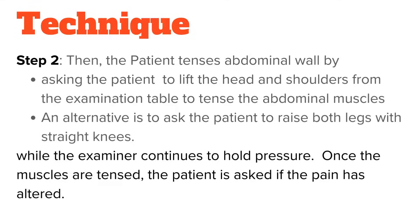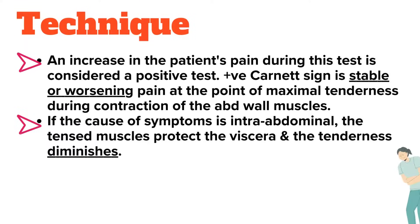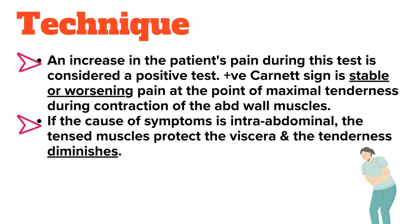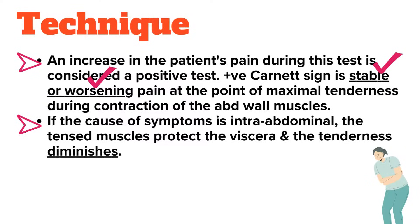Once the muscles are tensed, the patient is asked if the pain has altered. An increase in pain during this test is considered a positive test. A positive Carnett's sign is stable or worsening pain at the point of maximal tenderness during contraction of the abdominal wall muscles. If the cause of symptoms is intra-abdominal, the tensed muscles protect the viscera and the tenderness diminishes.